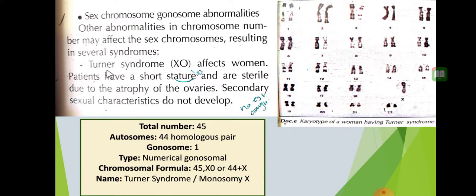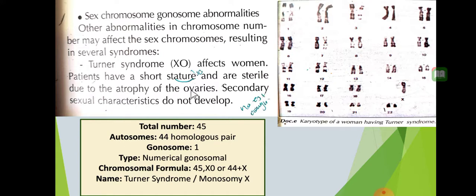First, we have Turner syndrome. In the karyotype of Turner syndrome, there is only one X chromosome — no homologous X and no Y, just one X. This individual will be a girl. Affected women have a short stature and are sterile due to the atrophy of the ovaries.